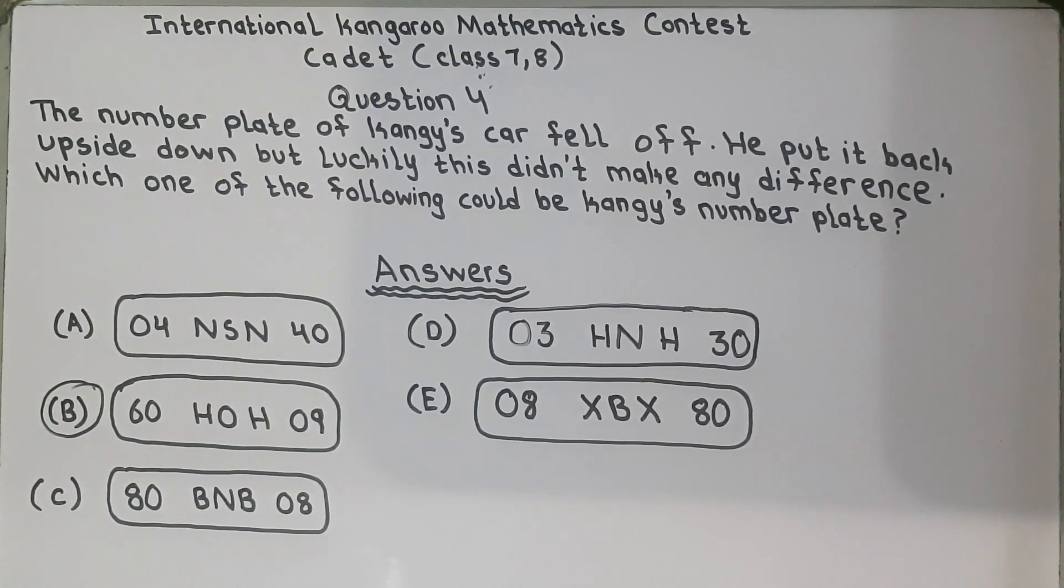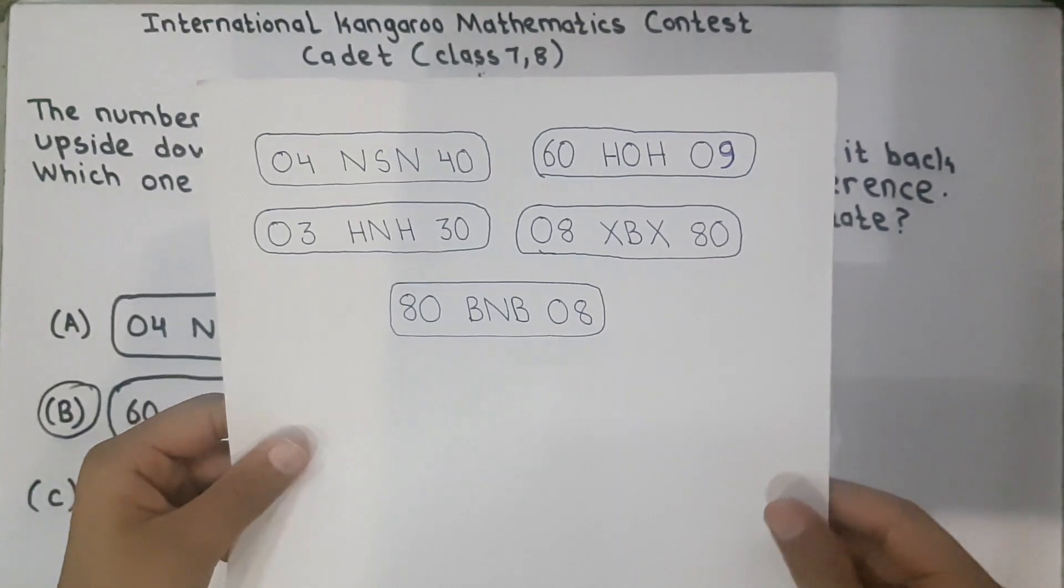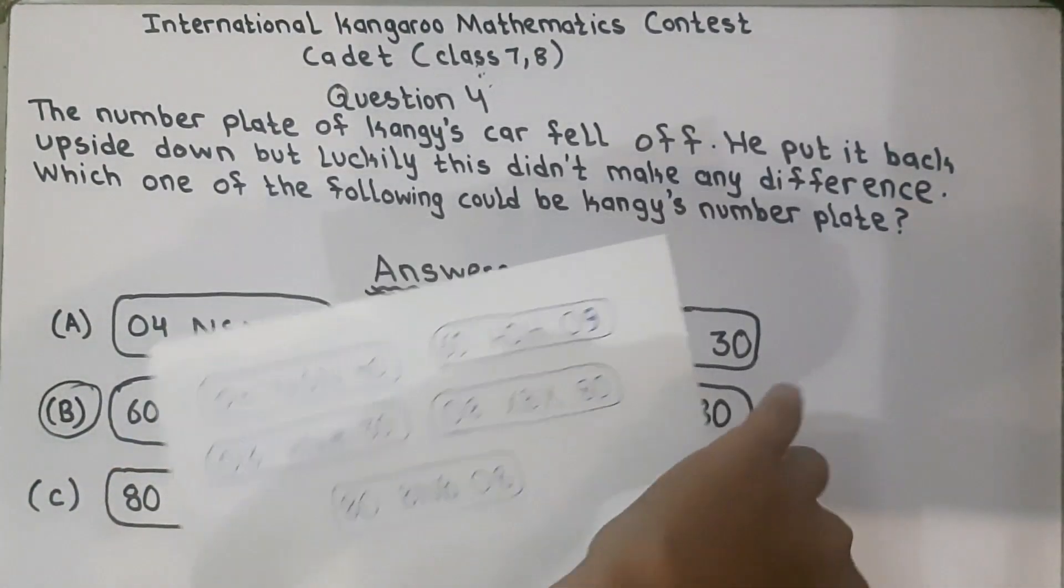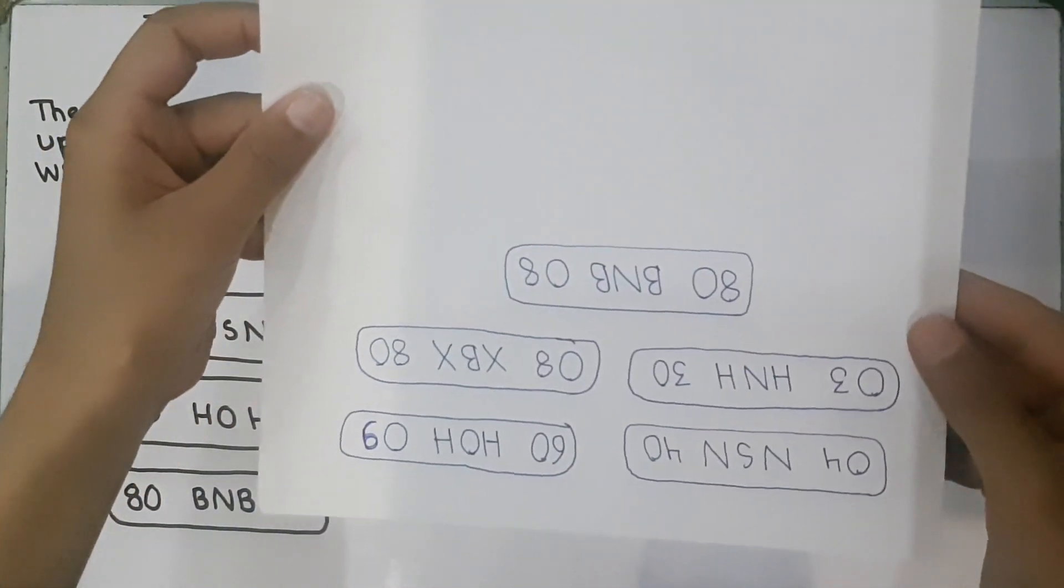So for this question we will need this. I have written the five number plates on the paper and we will rotate this paper and see which is Kangaroo's number plate.